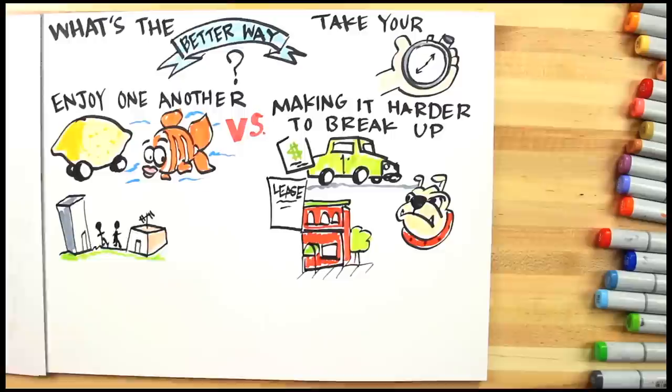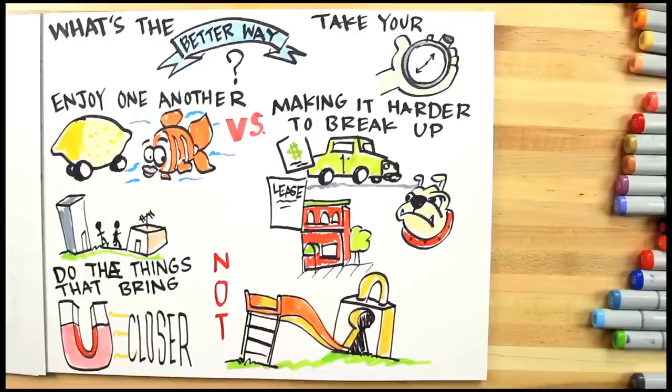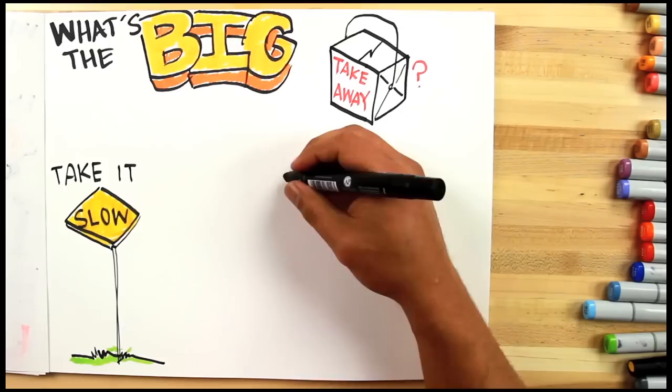Decide to do the things that bring you closer, don't slide into the things that lock you in. So what's the big takeaway from all this? Again, take it slow so you don't get a DUI: Decisions Under the Influence.